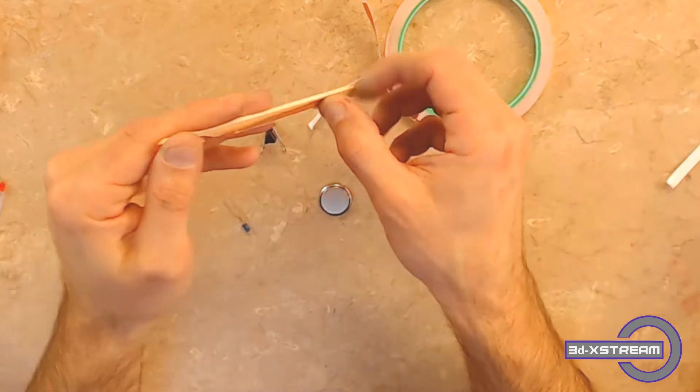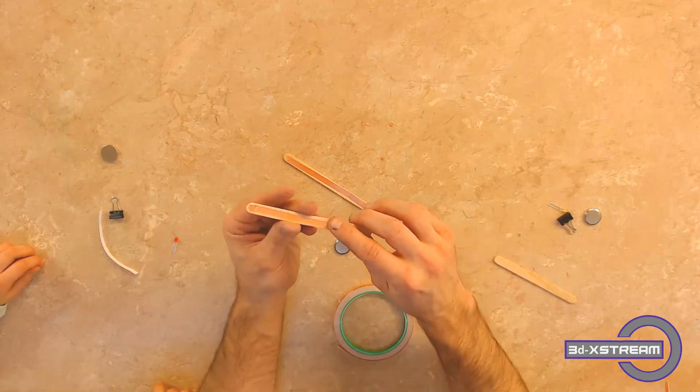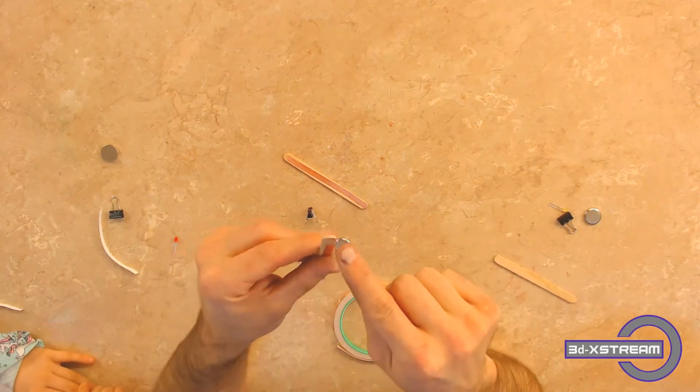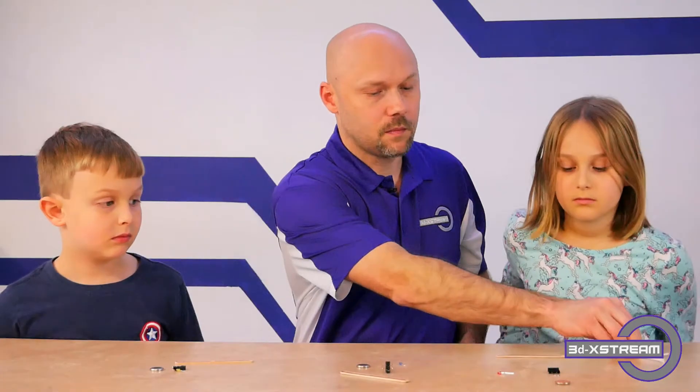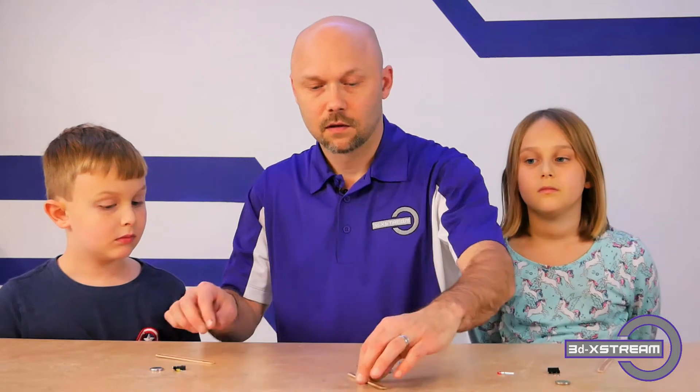Make sure you get it on the popsicle stick and flatten it out really good on one side. What's really important here is you want to make sure that you get the copper tape all the way to the top of either side. This is going to be the path for our circuit to follow.